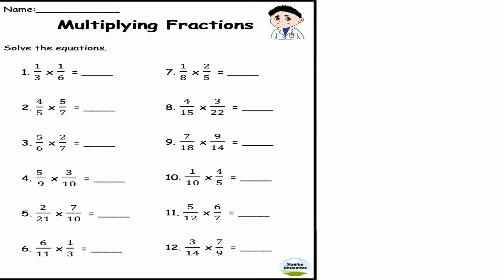Looking at multiplying fractions, 1/3 times 1/6. When I multiply fractions, I times the numerators together and the denominators together. I do 1 times 1 which is 1, and then 3 times 6 which is 18, so my answer is 1/18.